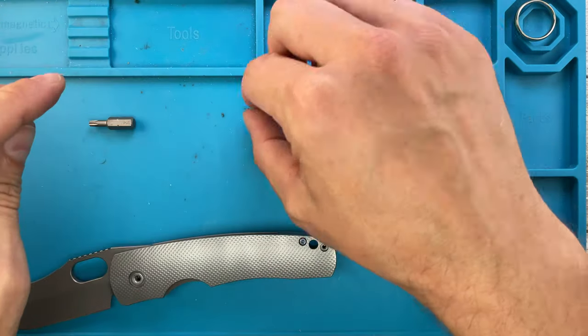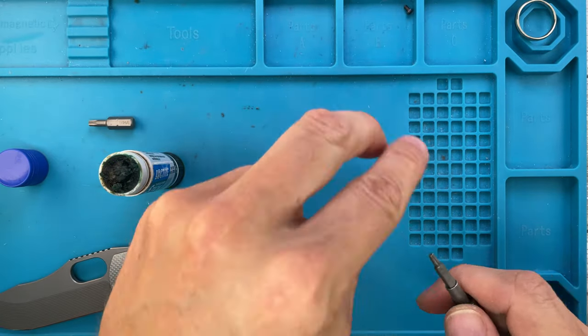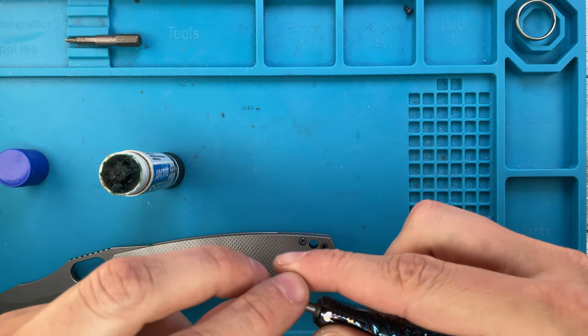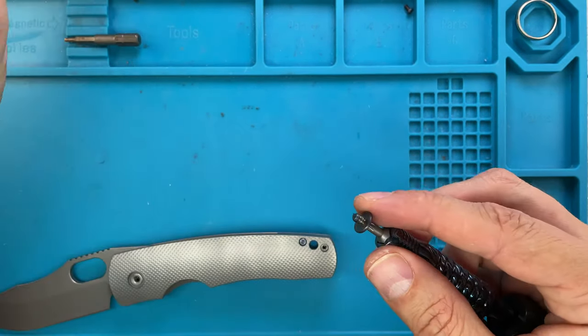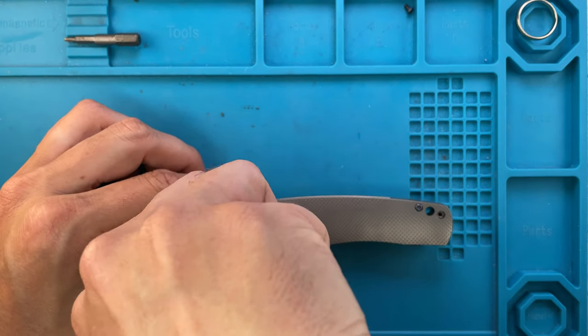See, in this case I think I'm gonna need two screwdrivers because it's spinning on the other side. So yeah, so I'm just gonna leave this last. I'm just gonna do the pivot first with some just a little touch of blue loctite for the pivot to avoid it from unscrewing as you use the knife. So this is in.